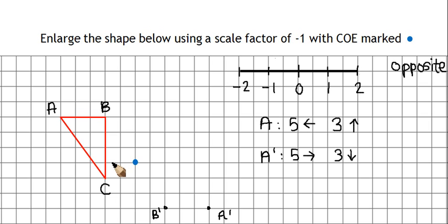And C, well that's 2 left and 1 down. So opposite of 2 left is 2 right. Opposite of 1 down is 1 up.